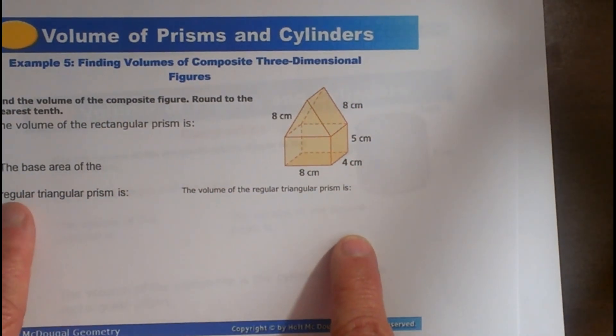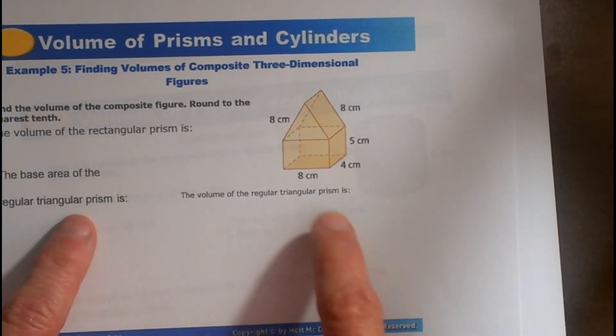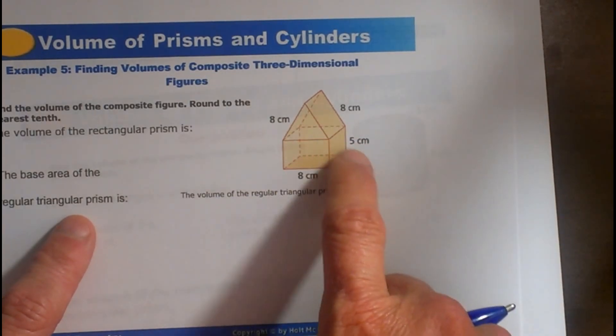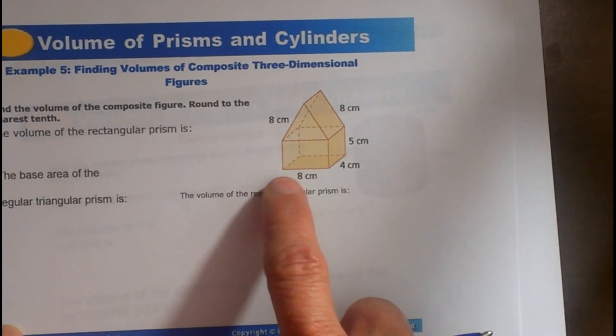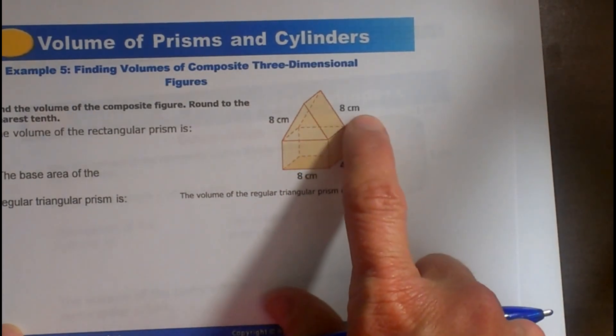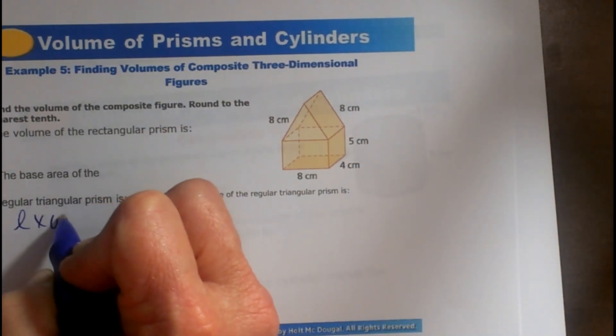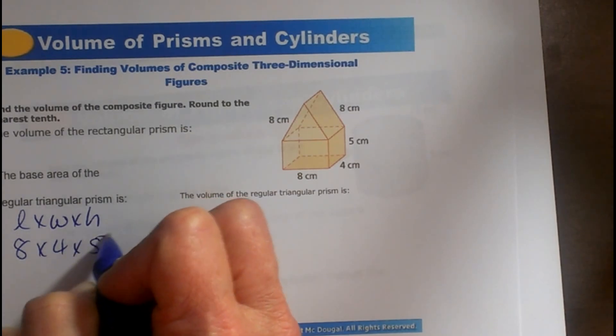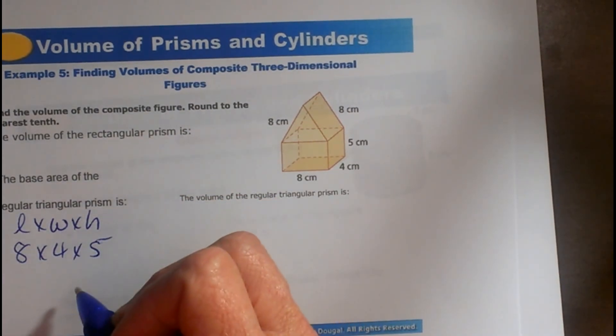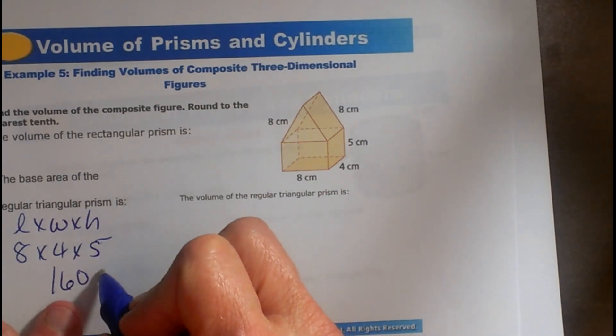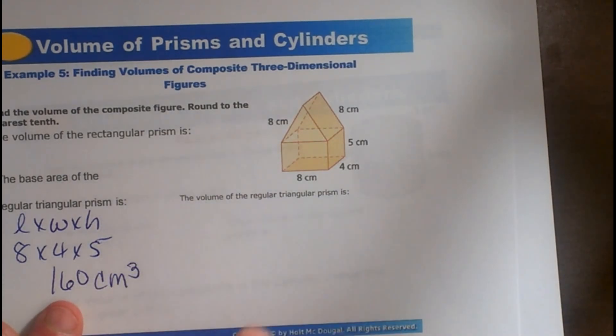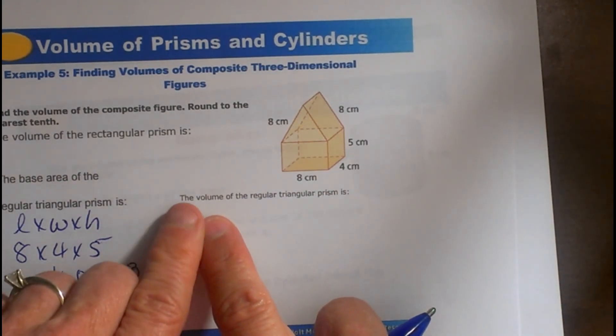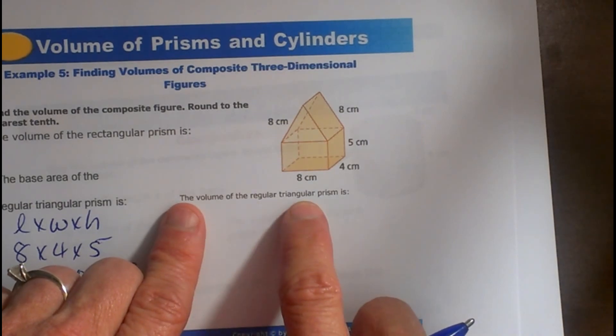So what you're going to do is find the area of the rectangular prism on the bottom. And we know that one's easy, it's length times width times height. So let's do that: 8 times 4 times 5, and that's going to be 40 times 4, which is 160.